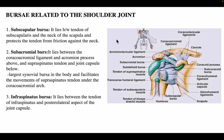Bursae related to the shoulder joint: The subscapular bursa lies between the tendon of subscapularis and the neck of the scapula, protecting the tendon from friction. The subacromial bursa lies between the coracoacromial ligament and acromion process above, and the supraspinatus tendon and joint capsule below. It is one of the largest synovial bursae in the body and facilitates movement of the supraspinatus tendon under the coracoacromial arch. The infraspinatus bursa lies between the tendon of infraspinatus and the posterolateral aspect of the joint capsule.